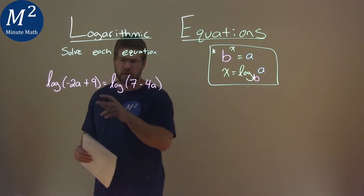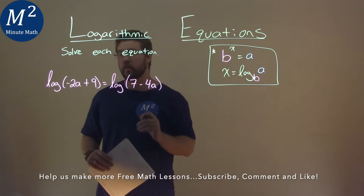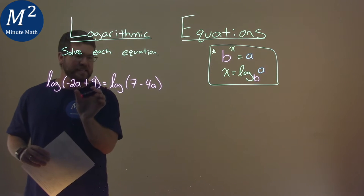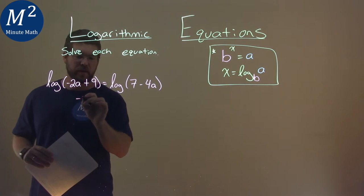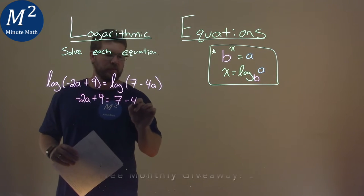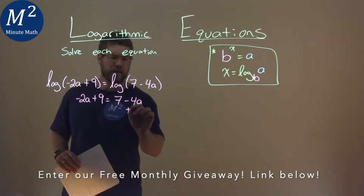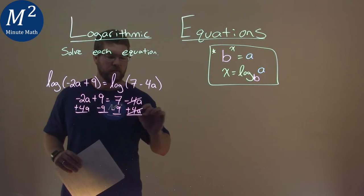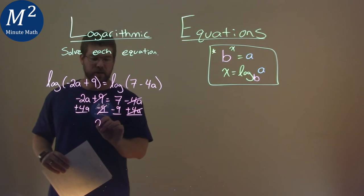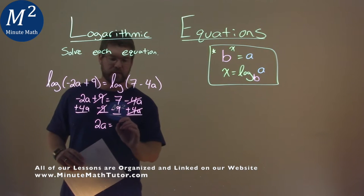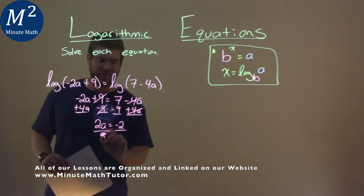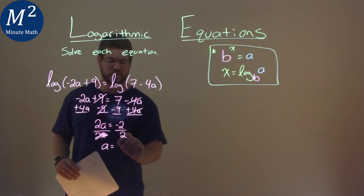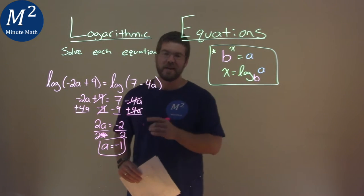We're given this problem: the log of negative 2a plus 9 is equal to the log of 7 minus 4a, and we have to solve this equation. Since these logs have the same base, we can look at the inside parts and set them equal to each other. Negative 2a plus 9 equals 7 minus 4a. I add 4a to both sides and subtract 9 from both sides. These cancel. Negative 2a plus 4a is 2a. 7 minus 9 is negative 2. I divide both sides by 2, and we're left with a equals negative 1. Our final answer is a equals negative 1.